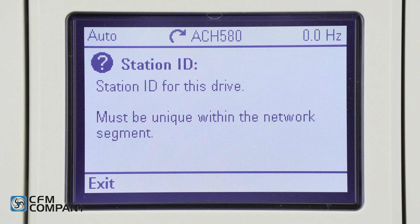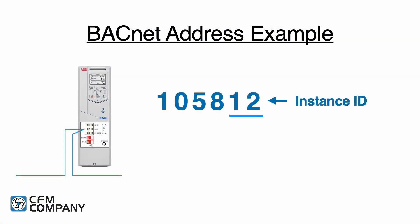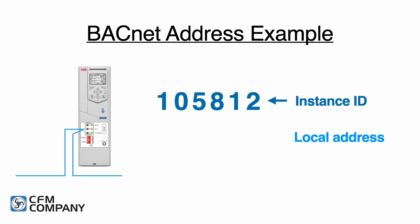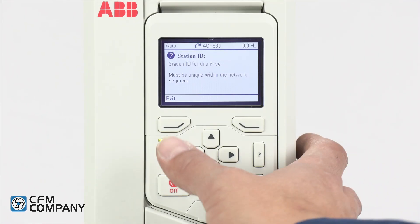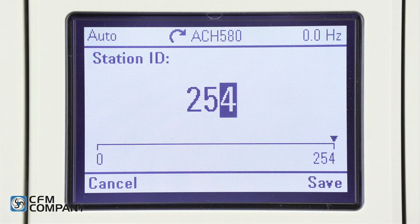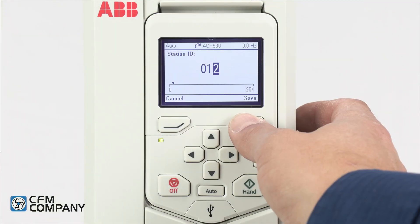The station ID for this drive must be unique within the network segment. The information for this example shows that the last two digits of the instance ID will be the local address. The local address can also be referred to as the MAC address, the station ID, or the device address. The local ID is not always the last two digits of the instance ID — it can also be a unique number between 1 and 247. Press exit to return to the communication setup menu. Press edit at station ID, change the value to 12, and press save.